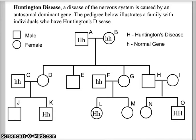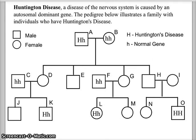The lowercase h is the normal gene, so the recessive trait is normal and the dominant trait is having the disease. We have a male who is heterozygous with Huntington's disease, and a female with two lowercase h's, making her homozygous recessive. This means she does not have Huntington's disease.